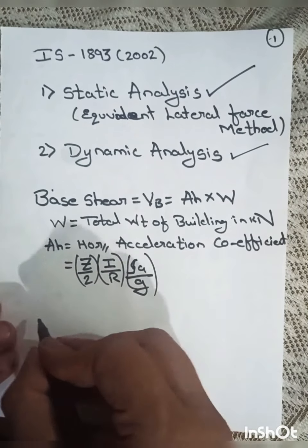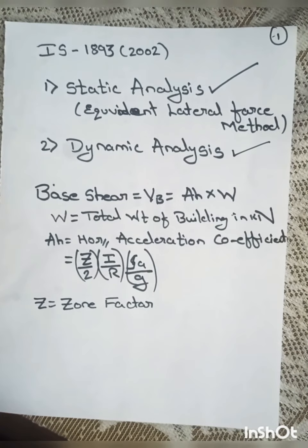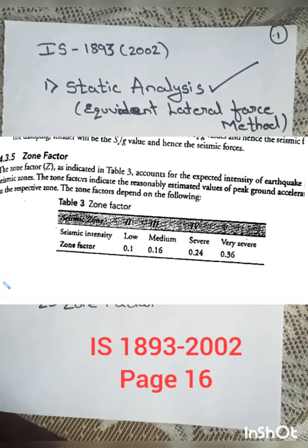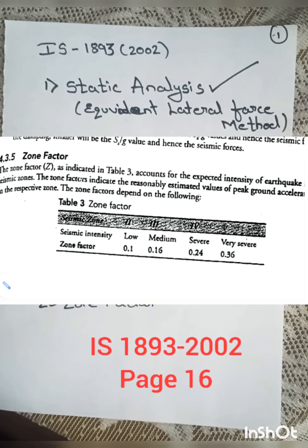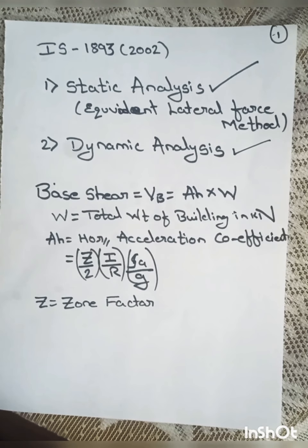Z refers to the zone factor. Our country is divided into four seismic zones — Zone II, III, IV, and V. Zone V is a high seismic area whereas Zone II is a low seismic area. The values from IS 1893 are: Zone II = 0.10, Zone III = 0.16, Zone IV = 0.24, and Zone V = 0.36.